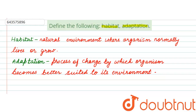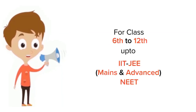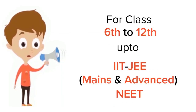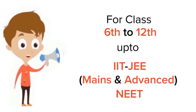Organisms adapt to their habitat by the following means: changes in their body, behavior, and location. So this is all about this question in which we were supposed to define habitat and adaptation. Thank you so much.